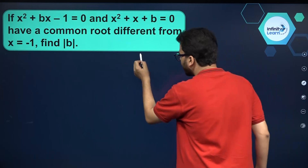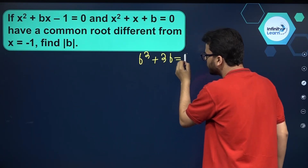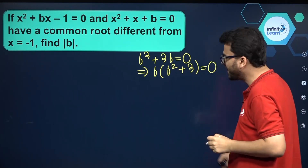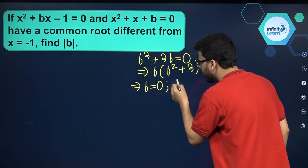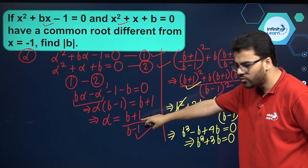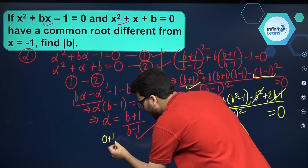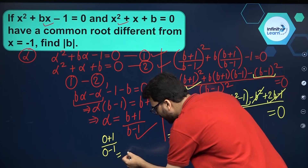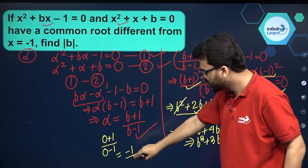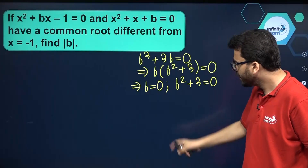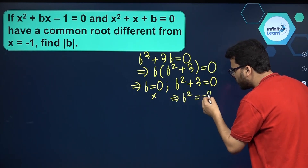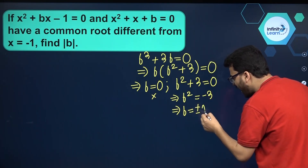We have b³ + 3b = 0. Taking b as common: b(b² + 3) = 0. Two possibilities: b = 0, or b² + 3 = 0. If b = 0, alpha = (0+1)/(0-1) = -1, but the question says the common root is different from -1, so we reject b = 0. Therefore b² = -3.